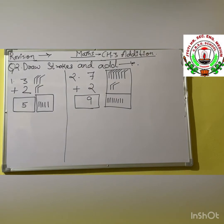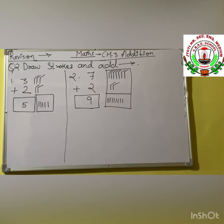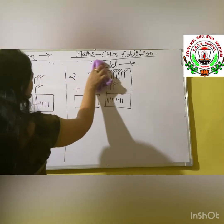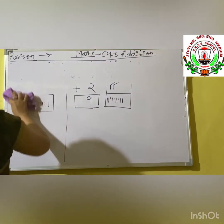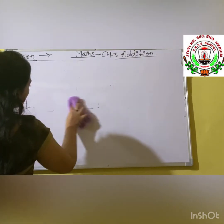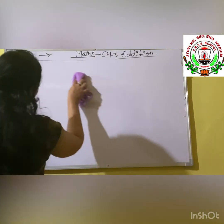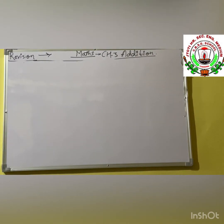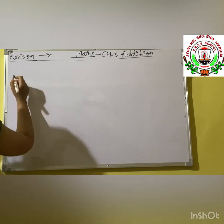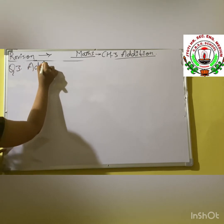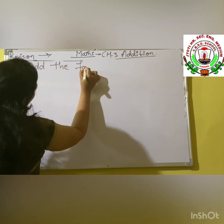Hope you all understood that. Now next question — question number 3: add the following. Some examples I am giving here. Open that page number and do revisions from those questions. Add the following.